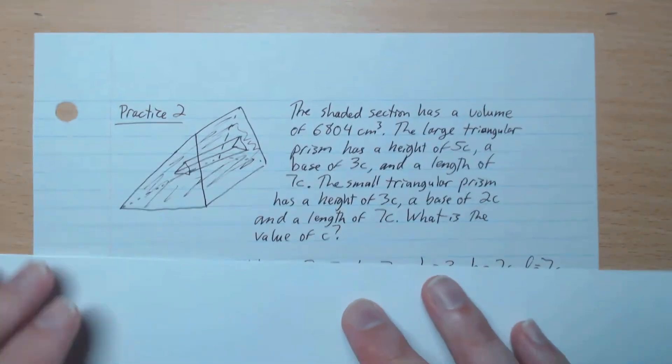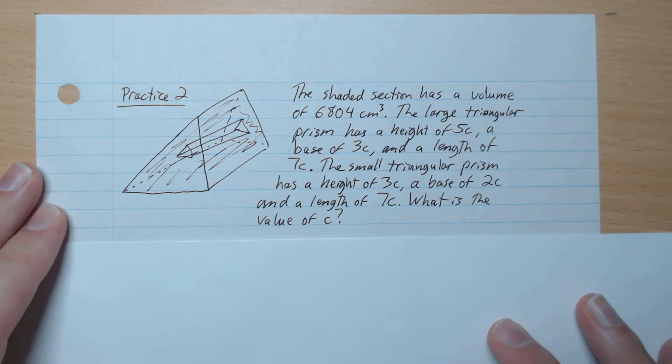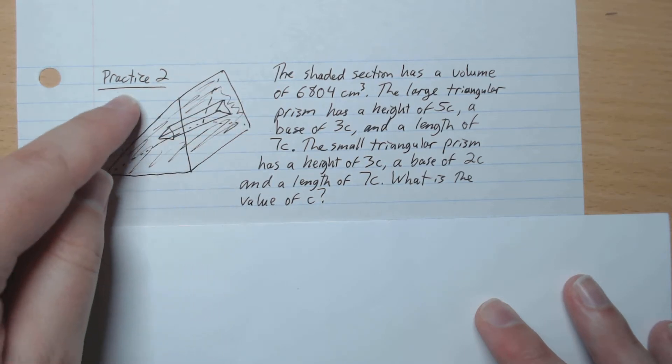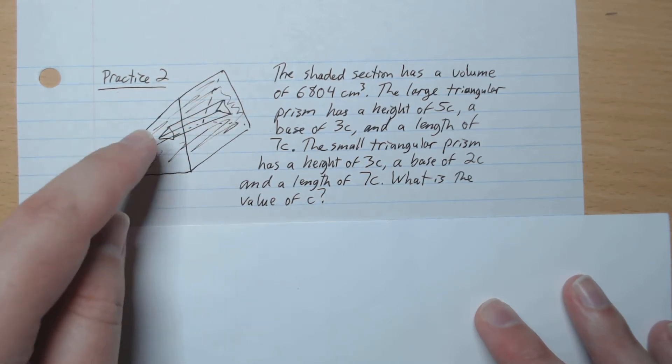Okay. Practice number two. So the shaded section has a volume of 6804. So this is outer volume like that. Not the hole, but just the outer volume.